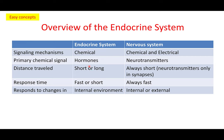Often we compare the endocrine system to the nervous system because both contribute to the same function. Both have signaling mechanisms. The endocrine system is always chemical, whereas the nervous system will sometimes have electrical signaling. The endocrine system will use hormones, and the nervous system will use neurotransmitters. The distance of effects could be short or long in the endocrine system, but it's very short in the nervous system.